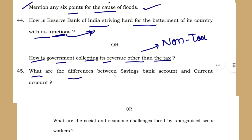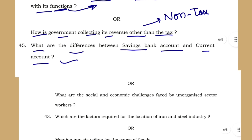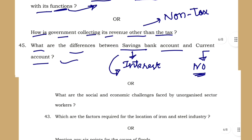What is the difference between a savings bank account and a current account? When it comes to a savings account, interest is paid. When it comes to a current account, no interest will be paid. Current accounts are opened by business people who have transactions in crores, while savings bank accounts are opened by normal people other than business people.